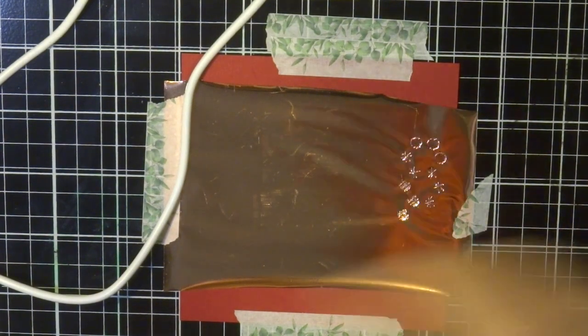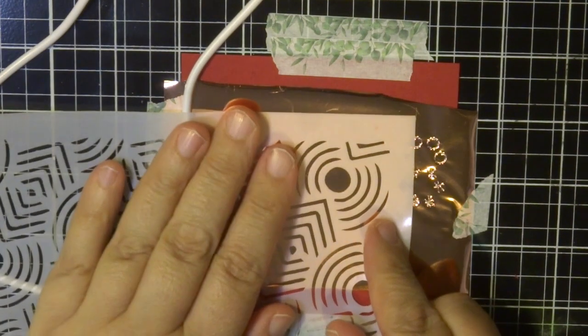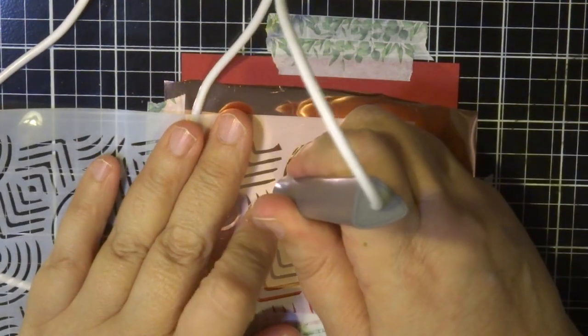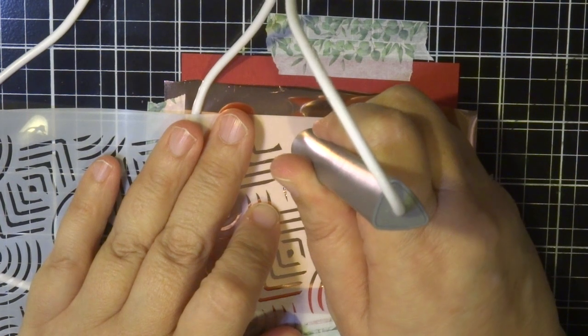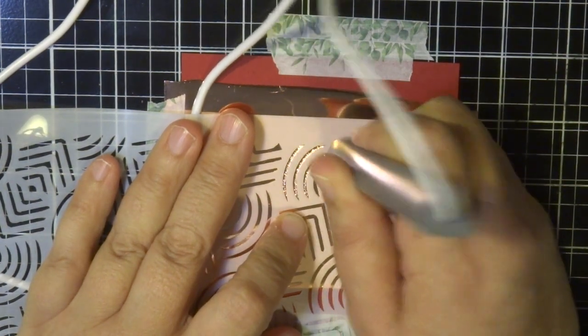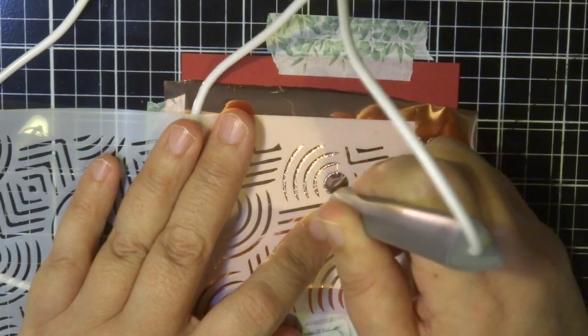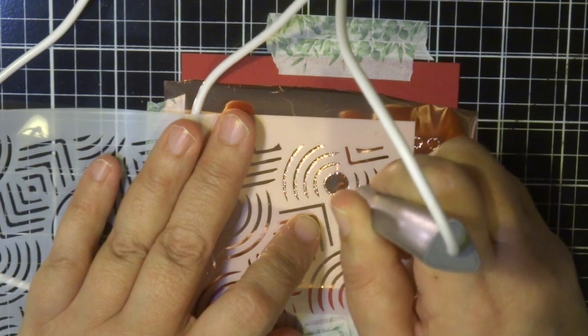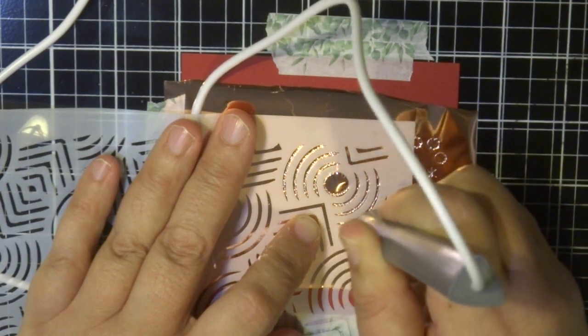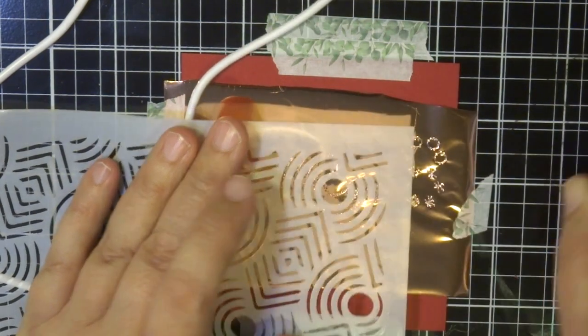Another way you can use this very quickly, I'm just going to show you. This is a stencil with just some lines. You can create a beautiful background with the foiling pen. You can imagine this all onto a card stock. That would be quite unique just using the foiling pen and just a line stencil like this one here. Really effective.